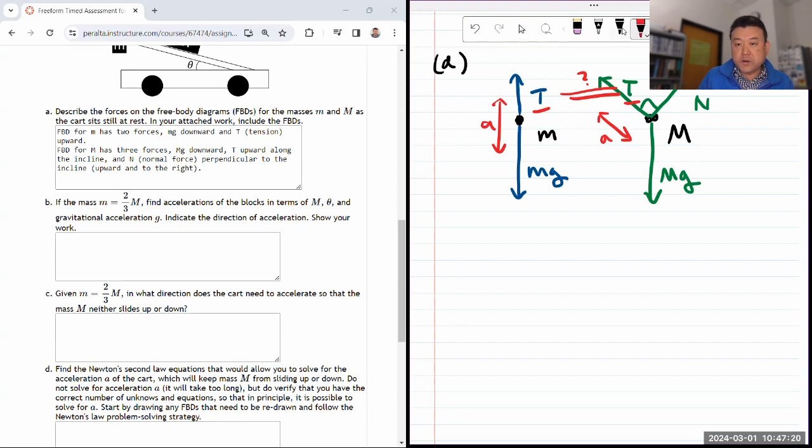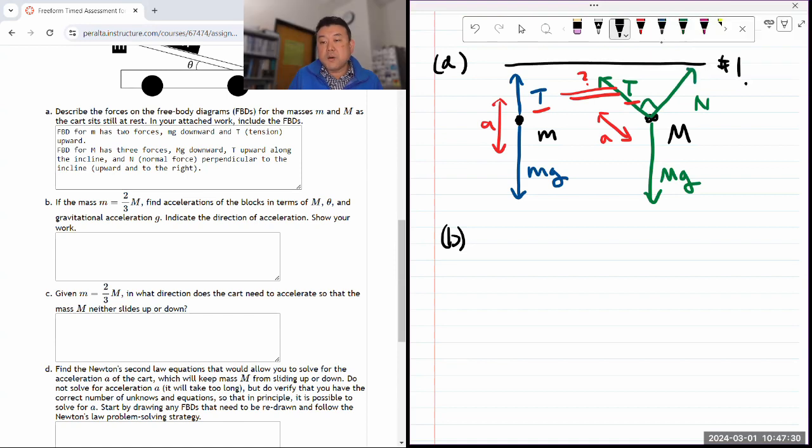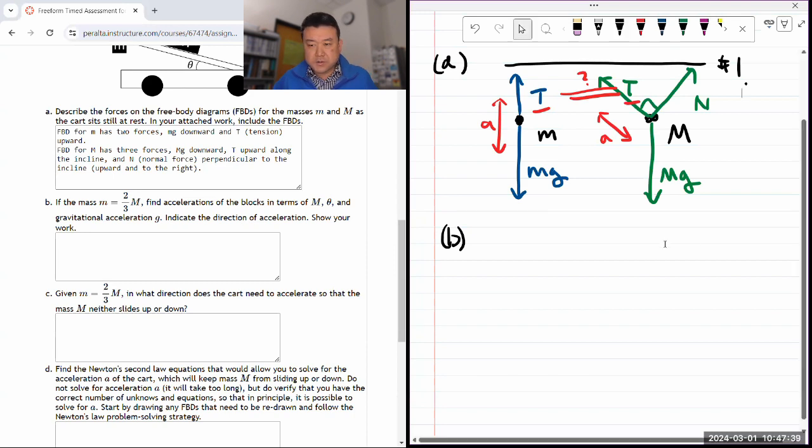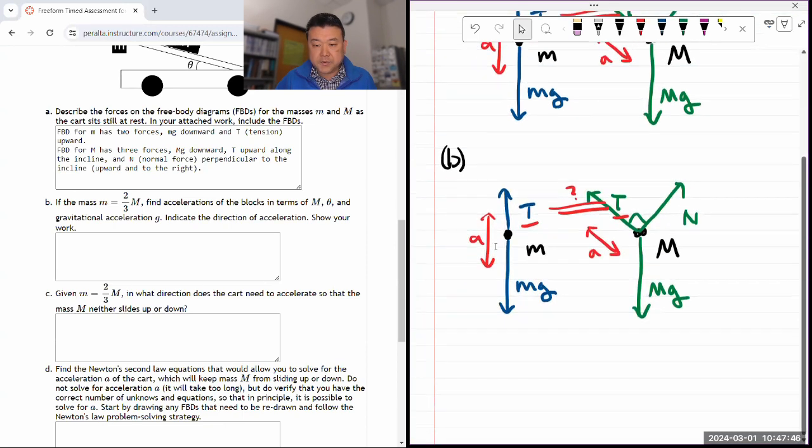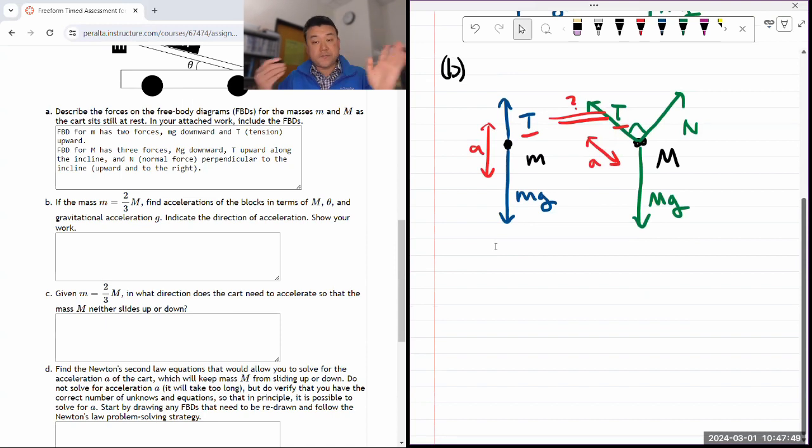So this is where you need to think about your standard strategy. So the question is guiding us through those steps. What we did here, this is already standard strategy step number one. So we need to standard strategy step number two, which is defining our axis. For small mass m, not much work. It's just basically one dimensional.